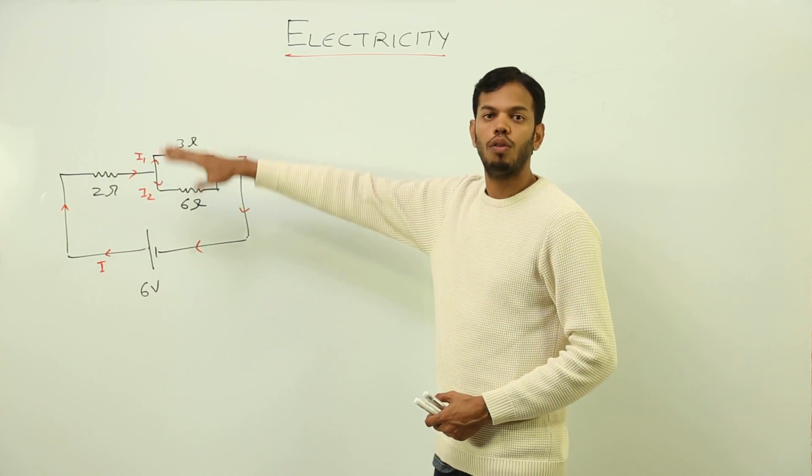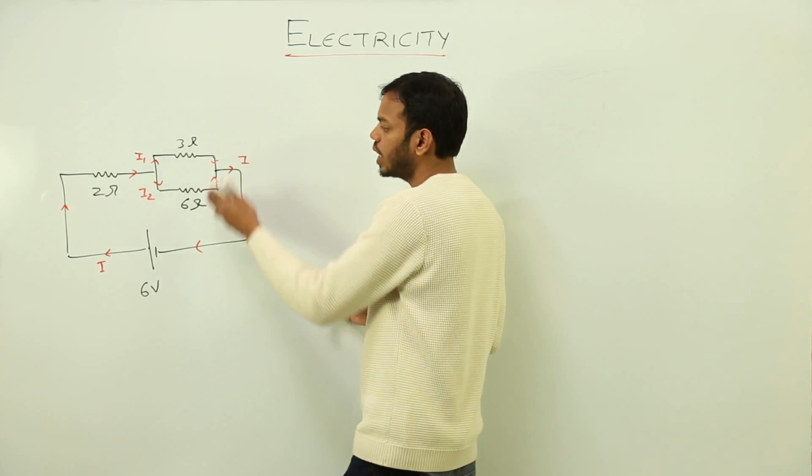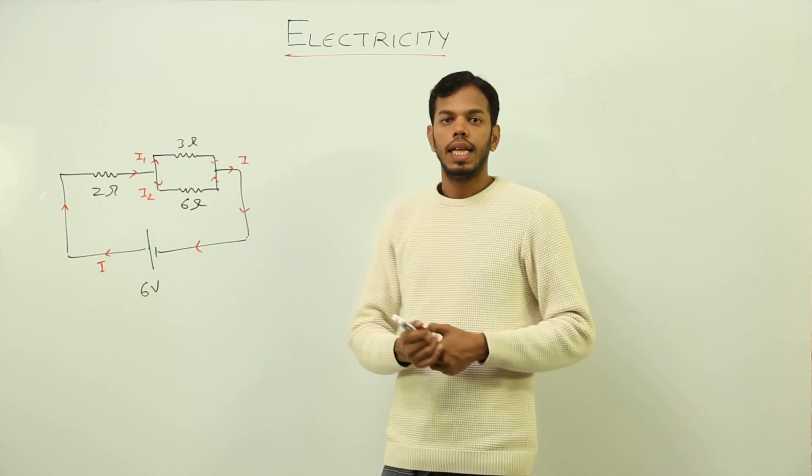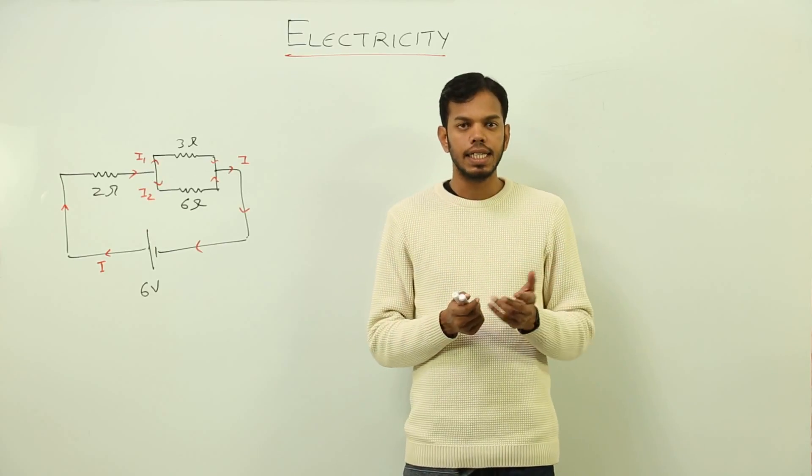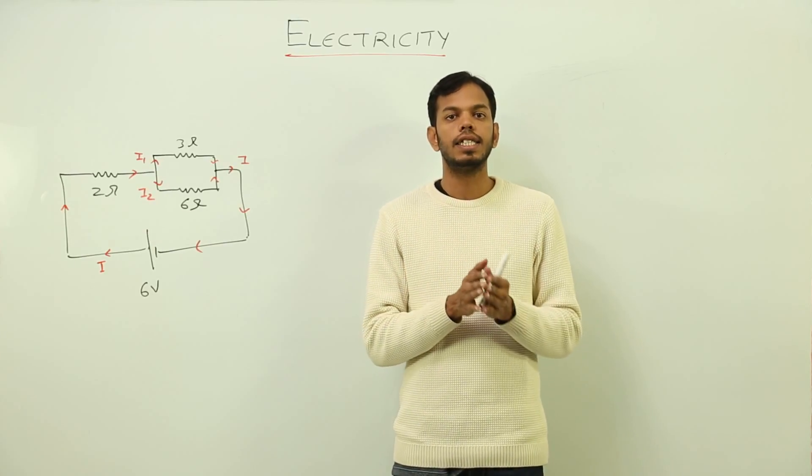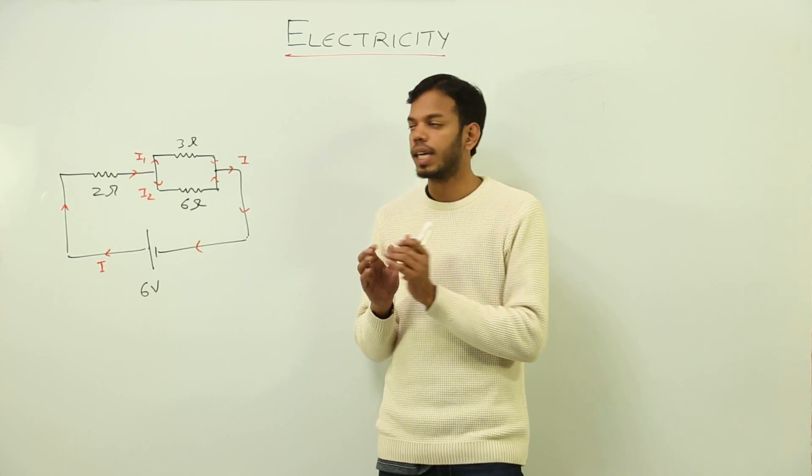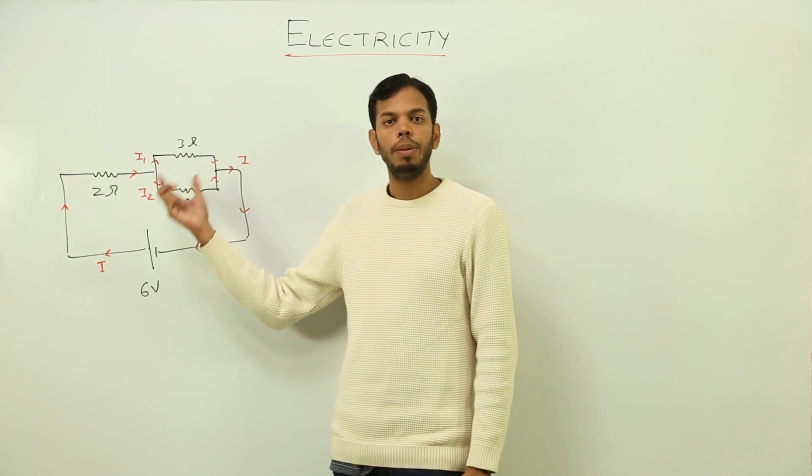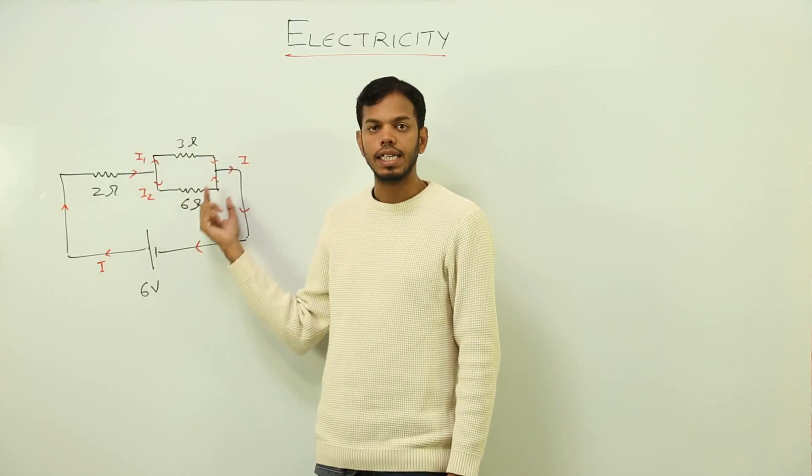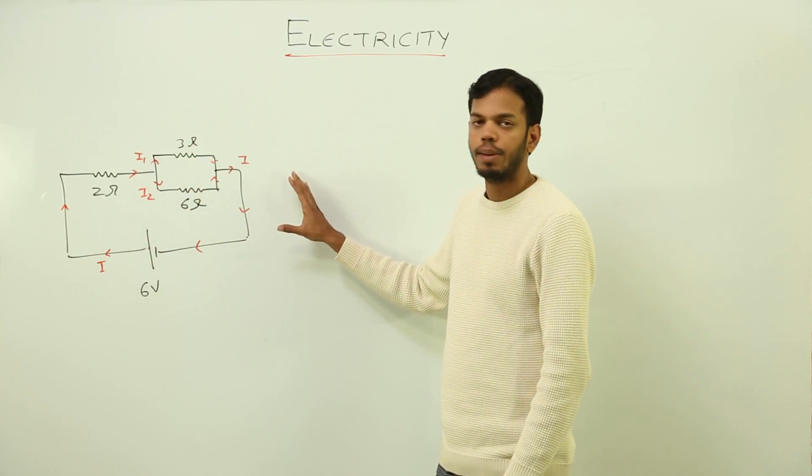It will entirely depend on the value of resistance. Remember a sentence: current seeks the least resistive path. That means current will be more at a point where there is less resistance. So by just looking at the diagram, you can always say that I1 is greater than I2.